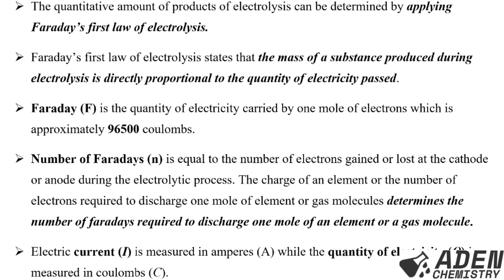Next, let's see what Faraday, written as capital F, is. It is the quantity of electricity carried by one mole of electrons, which is approximately 96,500 Coulombs.